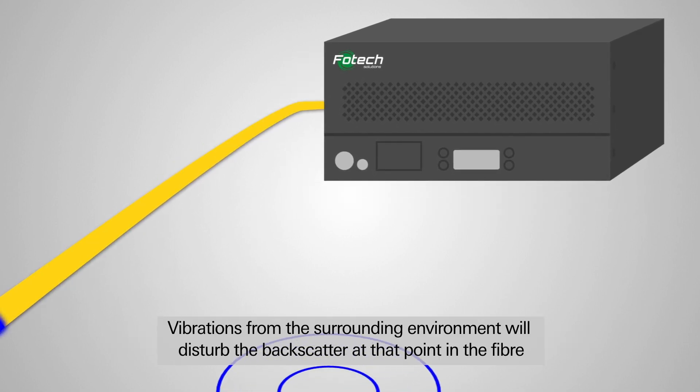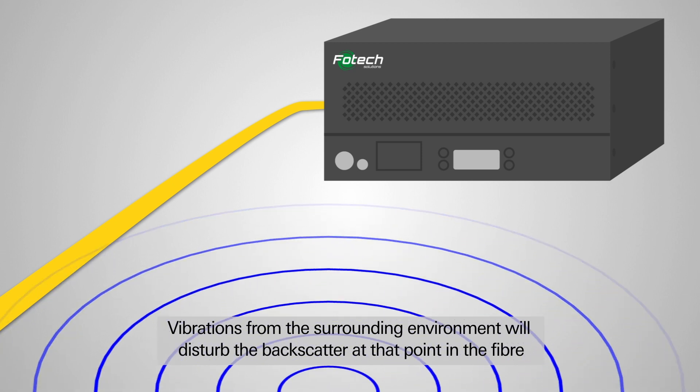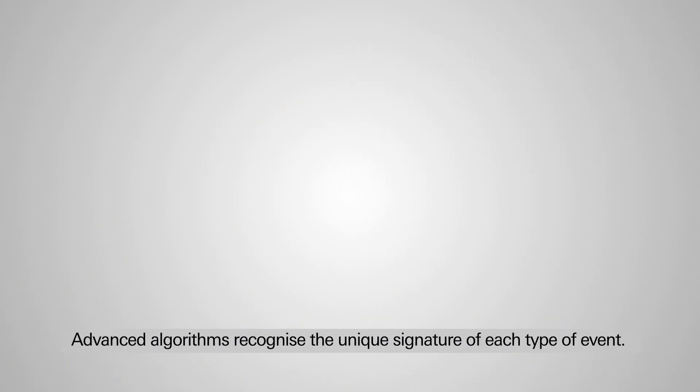Vibrations from the surrounding environment will disturb the backscatter at that point in the fibre, and will therefore be observed by the DAS interrogator.